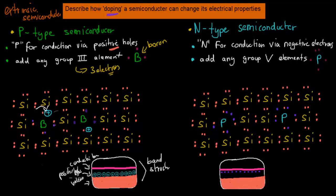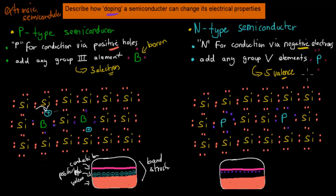A p-type semiconductor adds more positive holes in the lattice, which means we can carry more current. Whereas the n-type semiconductor — 'n' standing for conduction by negative electrons — is when we add a group 5 element. An example would be phosphorus, which is a group 5 element and therefore has 5 valence electrons.